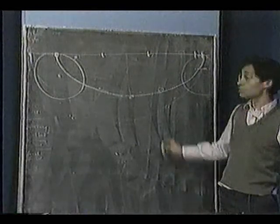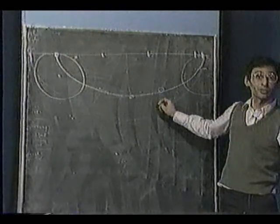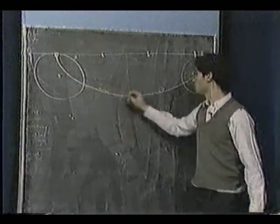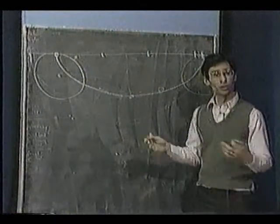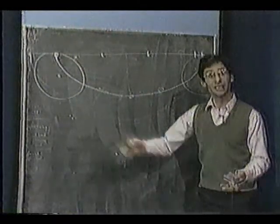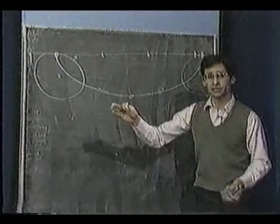Strangely enough, this was called the problem of the isochrone, the curve along which something has equal periods of swing no matter where you started it from.